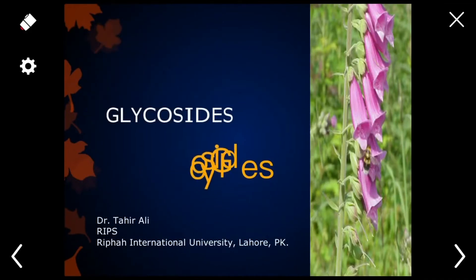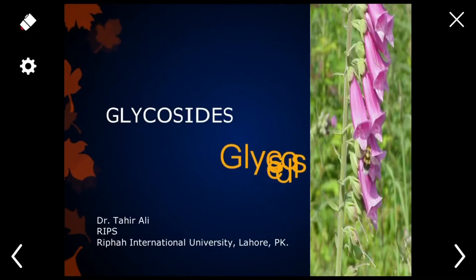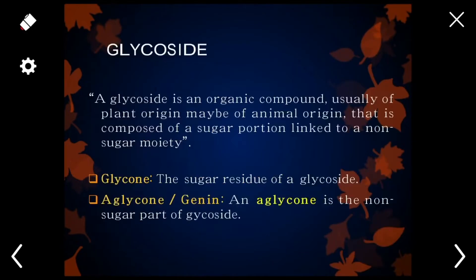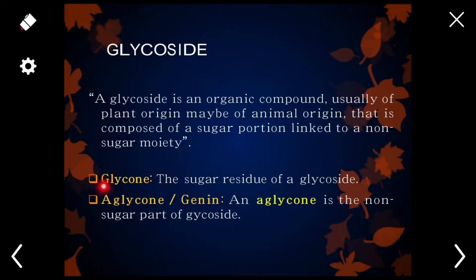Hello dear students, today we will discuss what are glycosides. Glycosides are organic compounds, usually of plant origin but may be of animal origin, that are composed of a sugar portion linked to a non-sugar moiety. Basically it is a secondary metabolite compound which consists of two portions: glycone and aglycone. The glycone portion is called the sugar portion and the aglycone portion, also called genin, is the non-sugar portion.